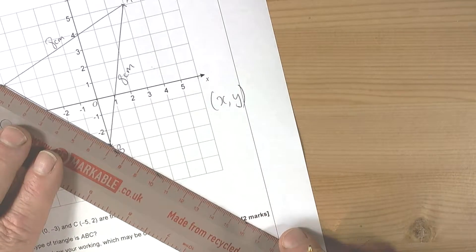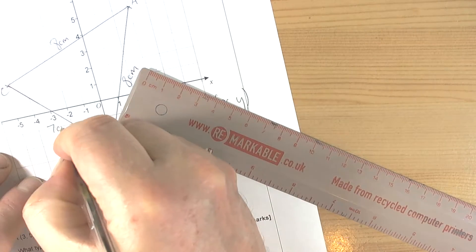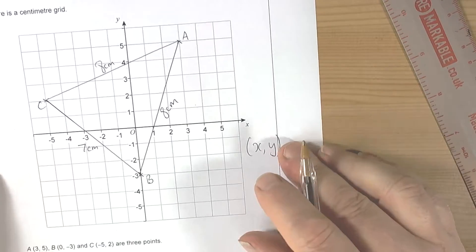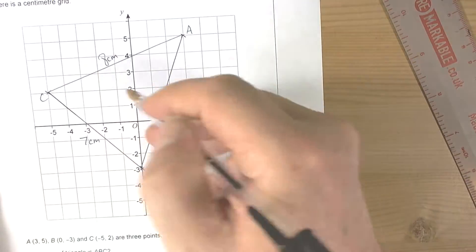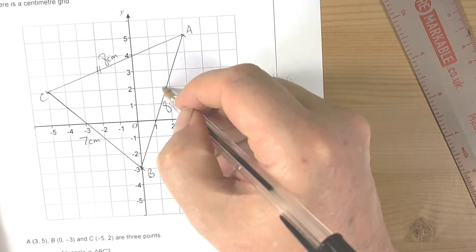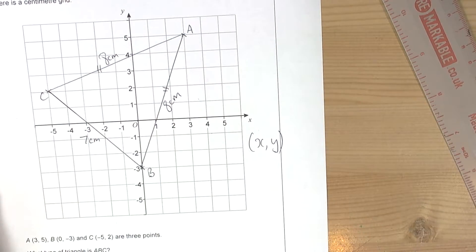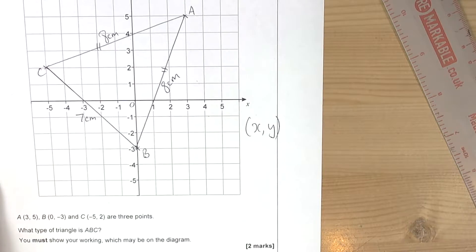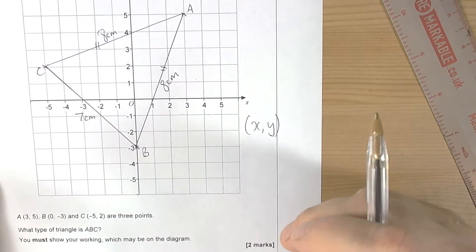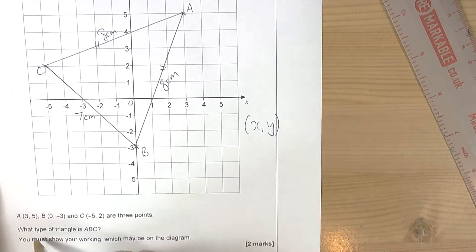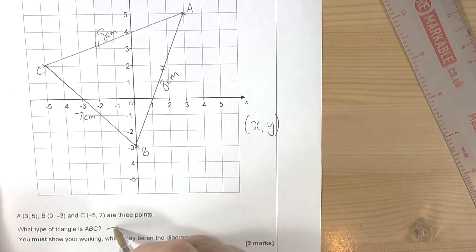Then we look at this one and it's seven centimeters. We can see from the shape that we've got two sides the same length. These two sides are of equal length, which tells us the triangle is an isosceles triangle. So when asked what type of triangle is ABC, you finish answering that question by saying it's an isosceles triangle, and we've shown all our method on the picture.